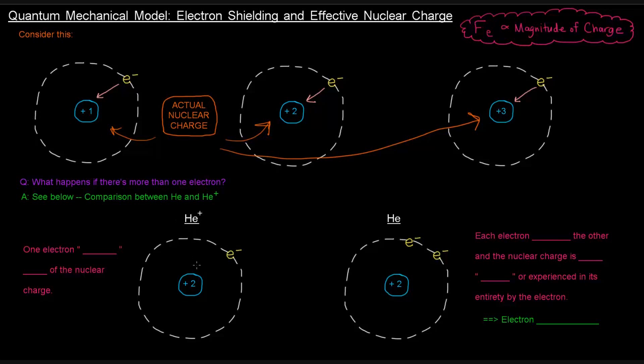So what's going on? In the first case, the nuclear charge will pull on the electron and attract it. And what happens is, since that electron is the only electron out there, this nuclear charge is really acting only on this.